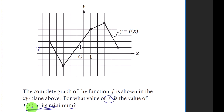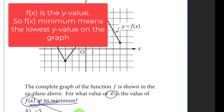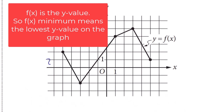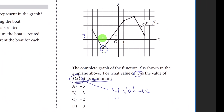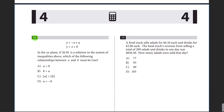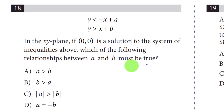Question seventeen: find the value of x where f(x) is at its minimum. 'Minimum' means the lowest y-value. Looking at the graph, identify the lowest point — the x-value associated with that dot is negative 3. The answer is B.